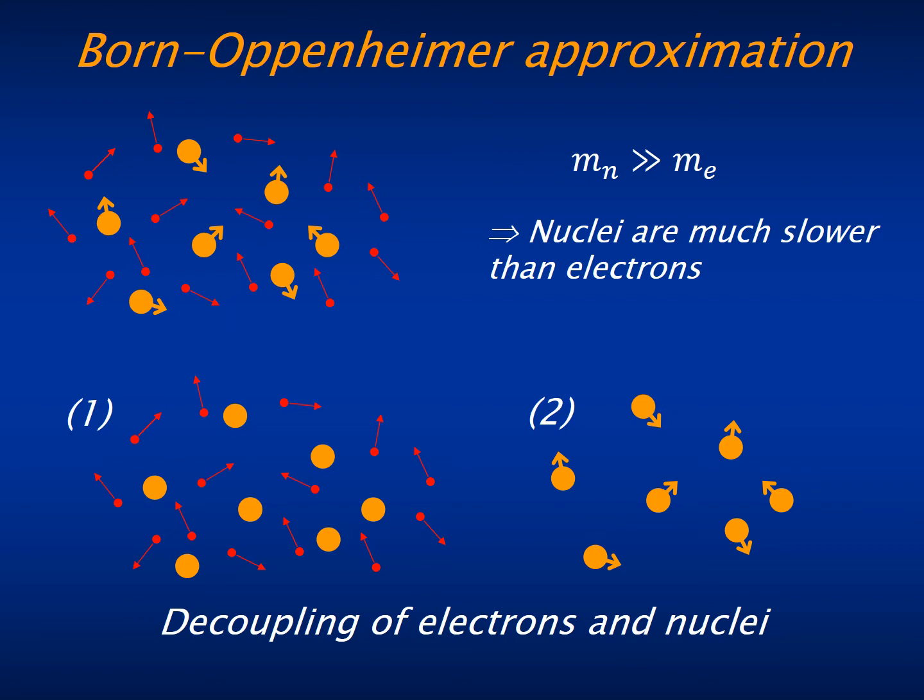Through the charge distribution of the electrons, we can find the electrostatic forces on the nuclei and find their movement most frequently by classical Newton dynamics. This decouples the motion of electrons and nuclei and greatly simplifies the problem.